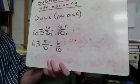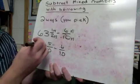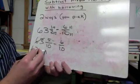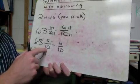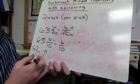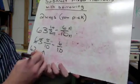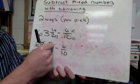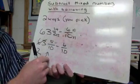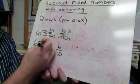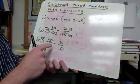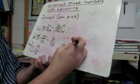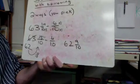Using the borrowing method: sixty-three becomes sixty-two. I take one whole off and put it with the fraction — one whole here is ten-tenths. Ten-tenths plus five-tenths gives fifteen-tenths. Now the problem is straightforward: sixty-two minus nothing over here is just sixty-two, and fifteen minus six is nine. So the answer is sixty-two and nine-tenths.